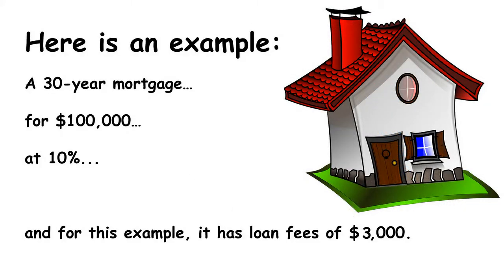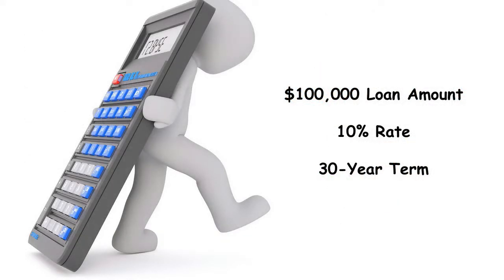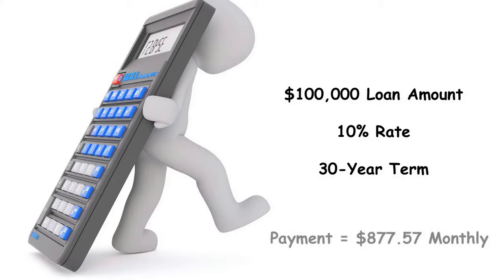I'm going to use a 30-year mortgage for $100,000 at a 10% note rate, and for this example we'll assume there are loan fees of $3,000. Next we have to figure out the payment. To do this we take the $100,000 loan amount, the 10% rate, and the 30-year term and put them into a basic financial calculator. The calculator tells us that our monthly payment is $877.57.